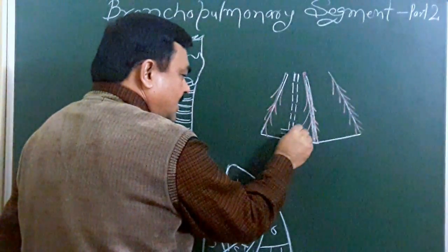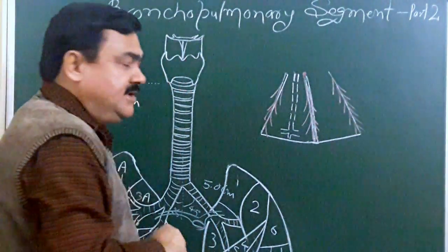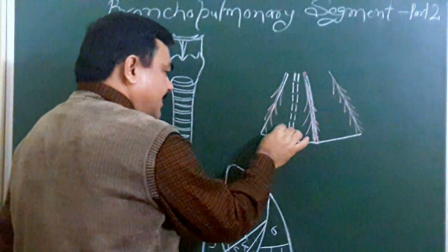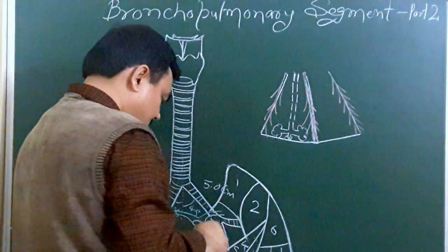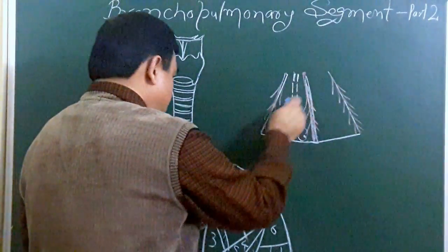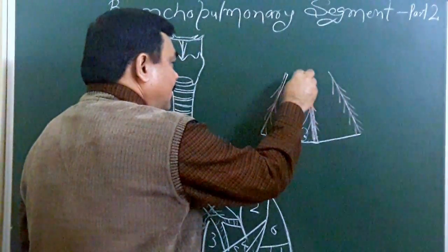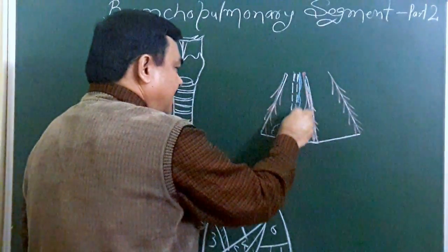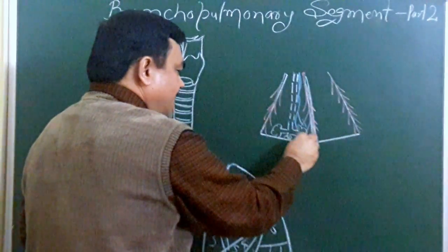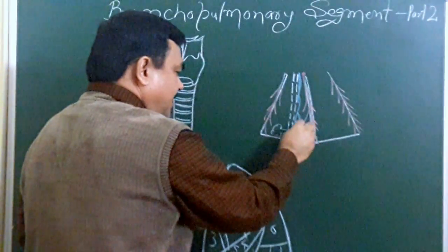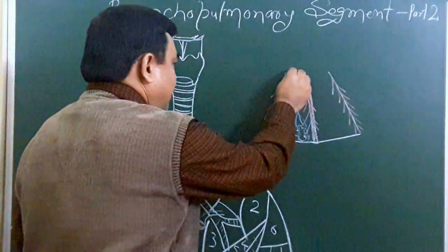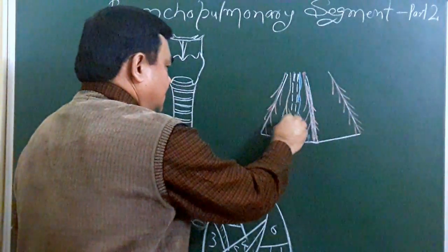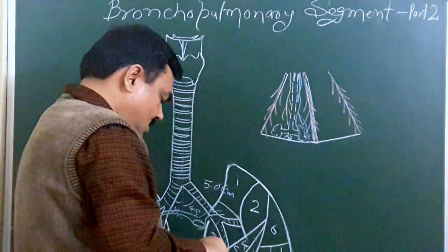The alveolar duct is continuous with the atrium and alveolar sac. Here are the alveoli. Here is the pulmonary artery. This pulmonary artery divides into numerous branches and forms a capillary network around the alveoli. Here is the lymphatic channel.